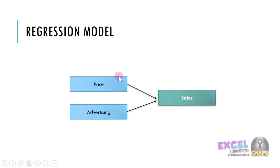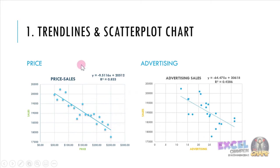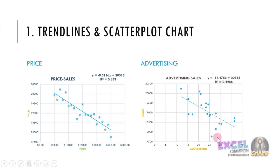The regression model used in this topic has sales as the dependent variable and price and advertising as the independent variables. For the trendline and scatterplot chart, both charts — price and advertising — show the trendline moving downward. For price, the data fit the line at 3.3%, while for advertising, only 42% fit the line.